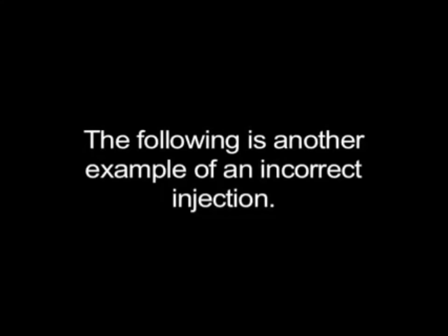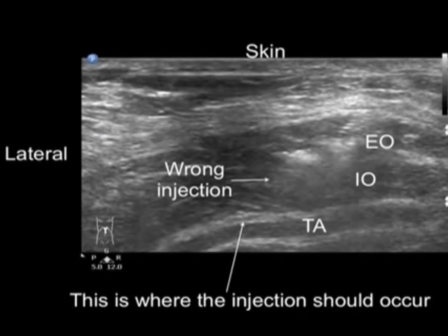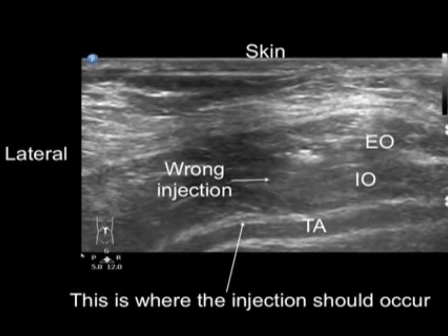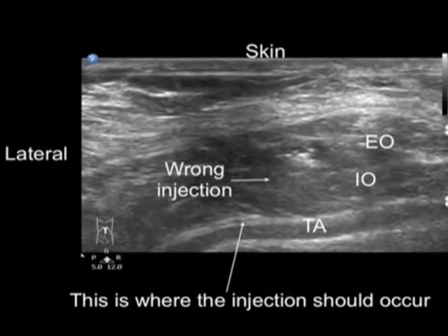Because it is so important to identify incorrect spreads of local anesthetic, we are going to share another example of an incorrect injection of local anesthetic. You can see the local anesthetic is spreading between the external oblique and internal oblique muscles in this example.